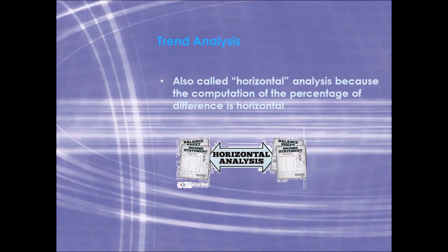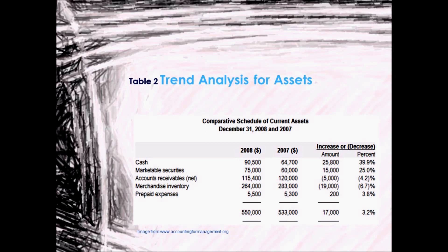Trend analysis is sometimes also called horizontal analysis because the computation of the percentage of difference is horizontal. Here is an example of trend analysis for assets in Table 2. First, we deduct the amount in 2007 from 2008, then divide the difference by the base year. For example, in cash, the amount in 2007 is 64,700 and in 2008 is 90,500. There is a difference of 25,800, so 25,800 divided by 64,700 equals 39.9%.